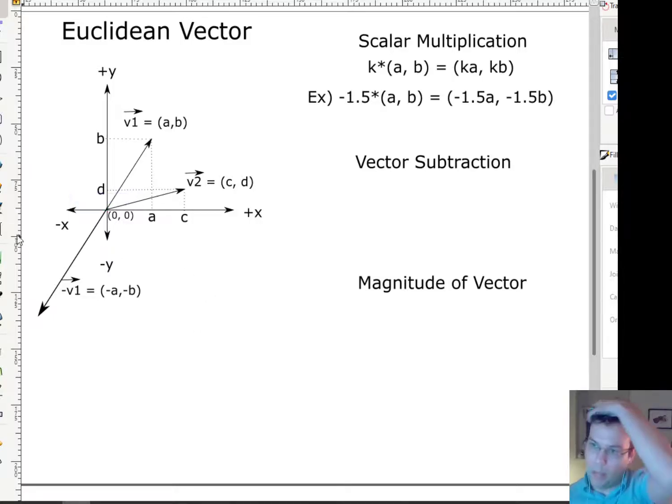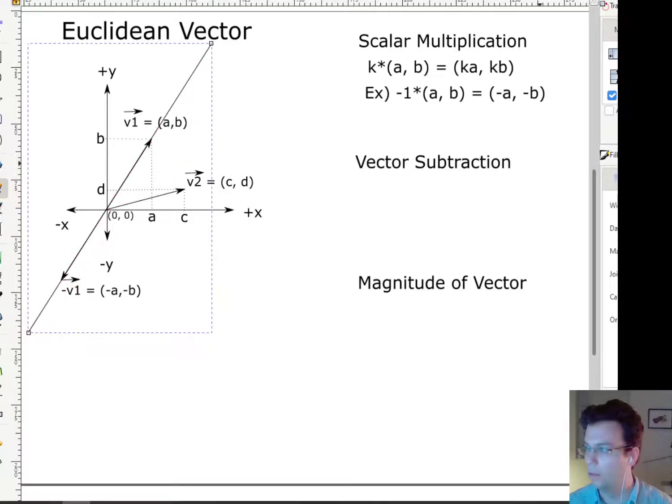But no matter what constant you choose, you will always be staying on the line that contains the original vector. So you'll always be staying on this line. Okay, so that's scalar multiplication and its geometric interpretation.